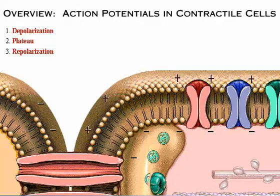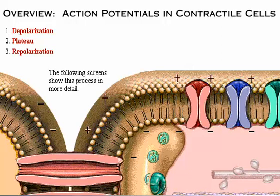Let's look at an overview of action potential generation in contractile cells. Once threshold is reached, the action potential starts with depolarization. During the plateau period, ion movement balances out and the membrane potential doesn't change much. Then repolarization begins and the membrane potential returns to its resting state.